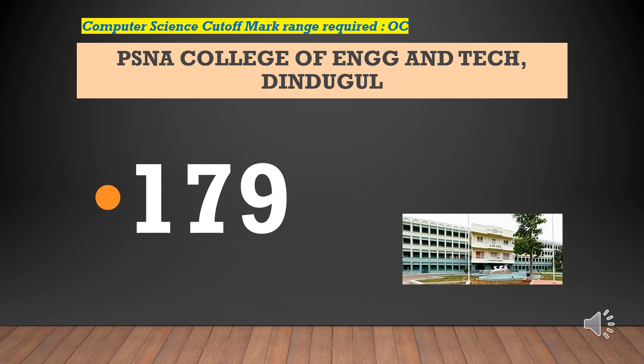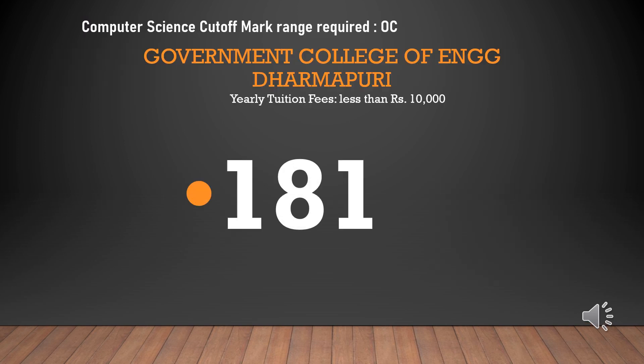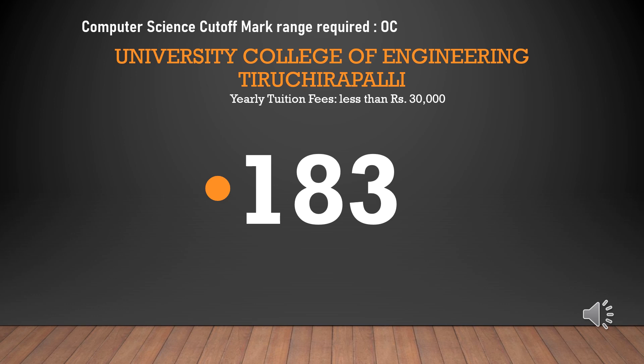PSNA College of Engineering and Technology — cut-off required for CSEOC is 179. St. Joseph's Institute of Technology — cut-off required for CSEOC is 182. Government College of Engineering Dharmapuri — cut-off required for CSEOC is 181. Anna University Regional Campus Madurai — cut-off required for CSEOC is 181.